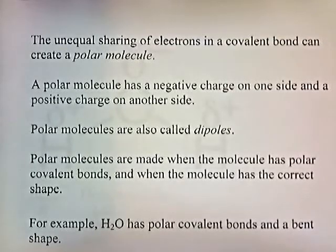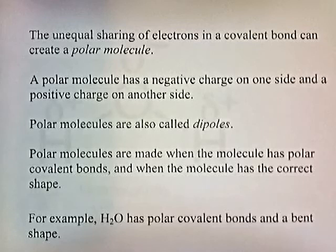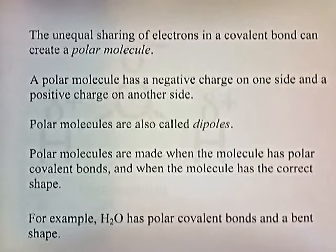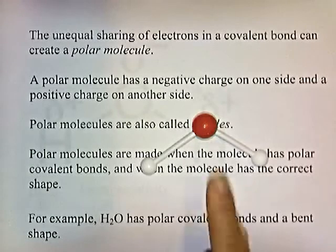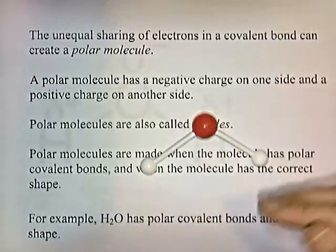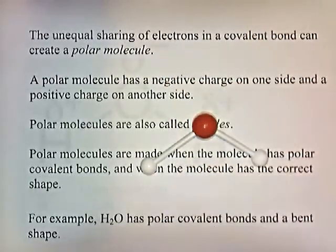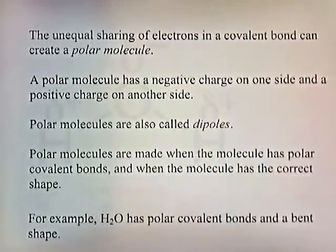The unequal sharing of electrons in a covalent bond can create a polar molecule — one that has a negative charge on one side and a positive charge on the other side. Polar molecules are also called dipoles. Polar molecules form when the molecule has polar covalent bonds and the correct shape. For example, H2O has polar covalent bonds and a bent shape, with oxygen in the middle and the hydrogens at each end, giving the molecule a top and a bottom.